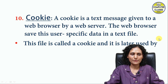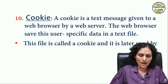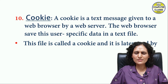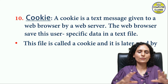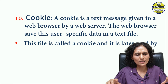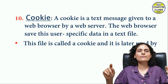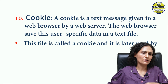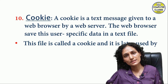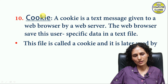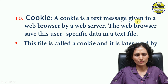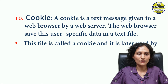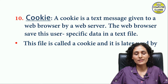Next is cookies. A cookie is a text message given to a web browser by a web server. The web browser saves this user-specific data in a text file. Cookies are a kind of record that your web browser keeps. These files are otherwise safe, but if a hacker or unauthorized person gets access to the cookies, it can be harmful. It is always advised to delete these files from time to time.